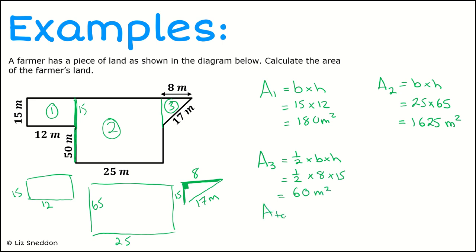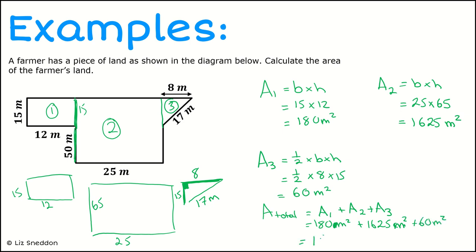To find the total area, I'm going to add each of those areas together: A1 plus A2 plus A3. So 180 metres squared plus 1625 metres squared plus 60 metres squared gives a total area of 1865 metres squared.